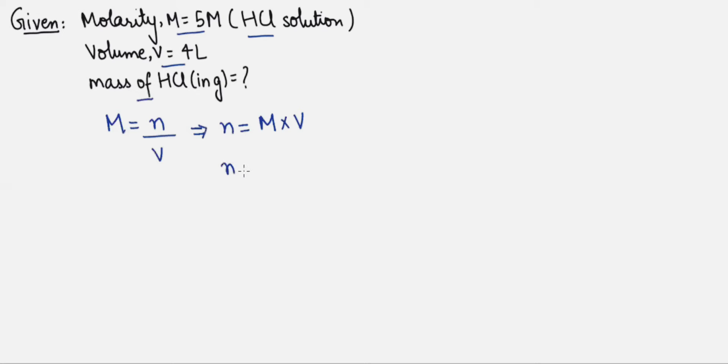Substituting the value of molarity and volume in the formula, we can write N equals 5 multiply 4, that is 20 moles. Now we have 1 mole of HCl equals 36.5 grams. So 20 moles of HCl will